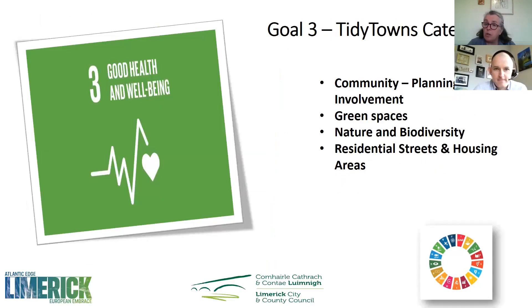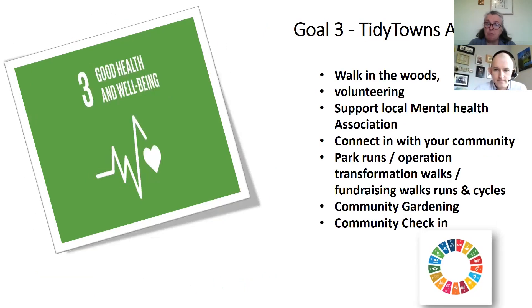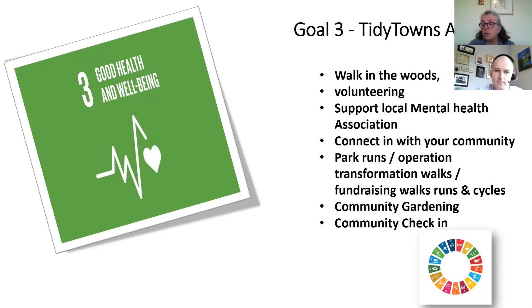Goal 3 is good health and wellbeing, covering community planning and involvement, green spaces, nature and biodiversity, and residential areas. The sky's the limit here: walking in the woods, volunteering, supporting local mental health associations, park runs, Operation Transformation walks, fundraising runs and cycles, community gardening, and community check-ins. For example, Newcastle West Tidy Towns supports the Darkness into Light walk every year and organises segregated bins at that event.